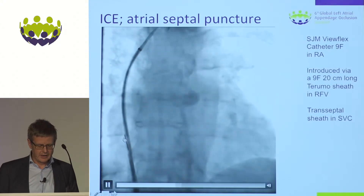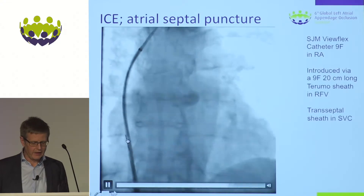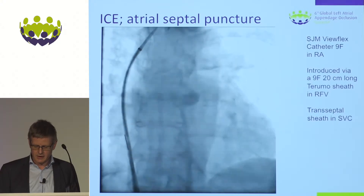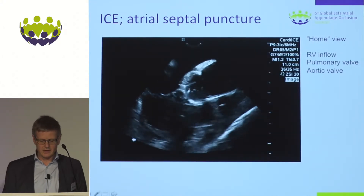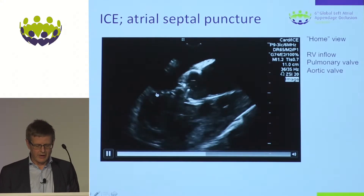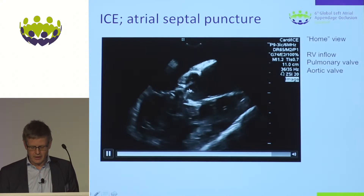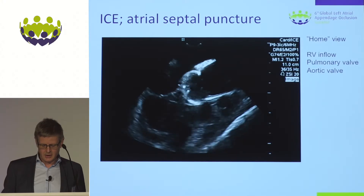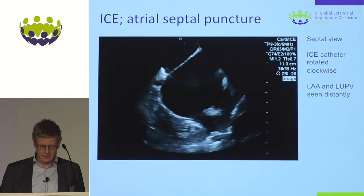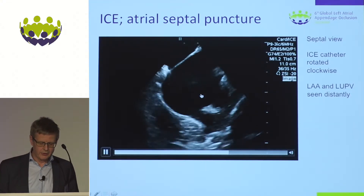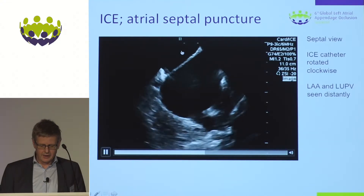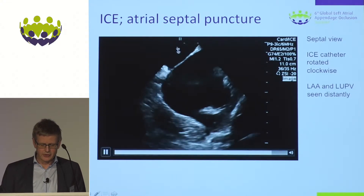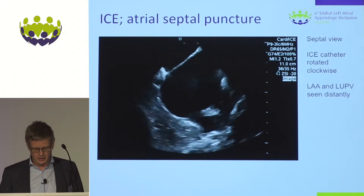The ICE catheter is advanced to the right atrium via the right femoral vein — the same vein used for the LAA device delivery, as there is no problem having a 12-French and a 9-French sheath in the same vein. In the right atrium you see the tricuspid valve, right ventricular inflow, pulmonary valve, and aortic valve. Rotating slightly clockwise gives the septal view, where you can see the inferior septum and, distantly, the left atrial appendage and a quite large left upper pulmonary vein — though the distance makes the right atrium a suboptimal window to the LAA.